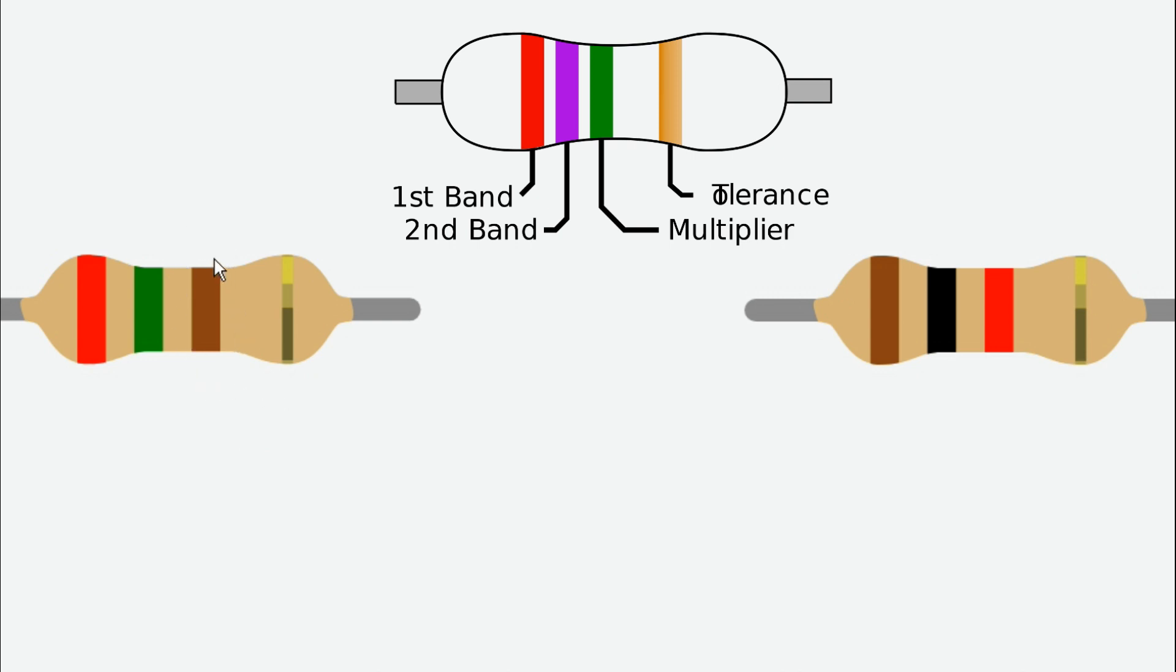The first band and second band give direct values, but the third band is a multiplier band so that is into 10 power. Okay, we will get this. Now we can go to the resistor. The tolerance band is going to come on the opposite side.